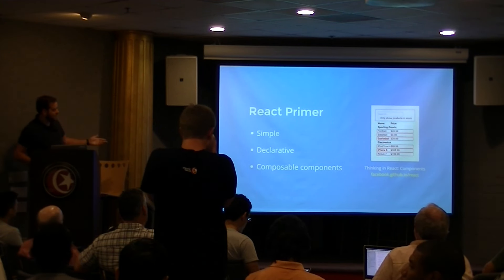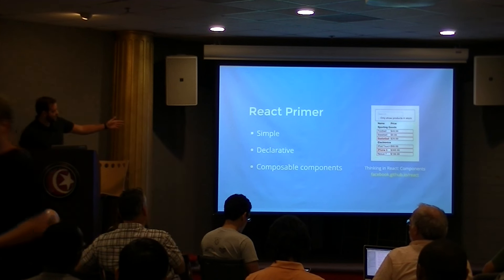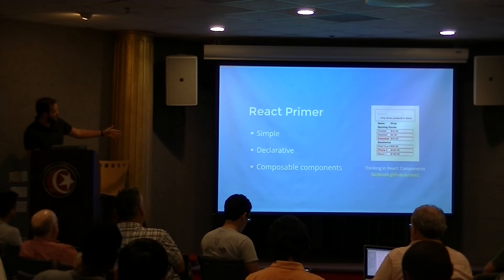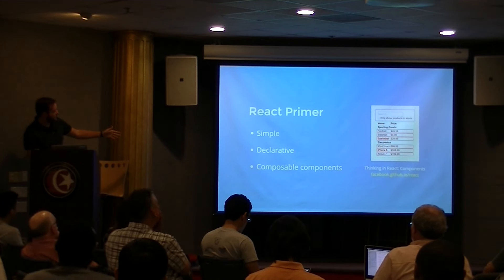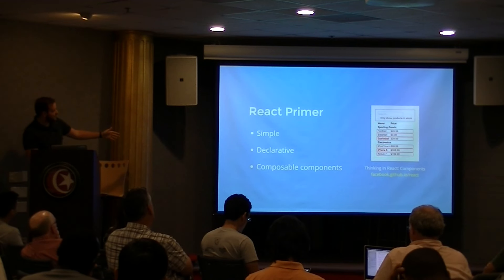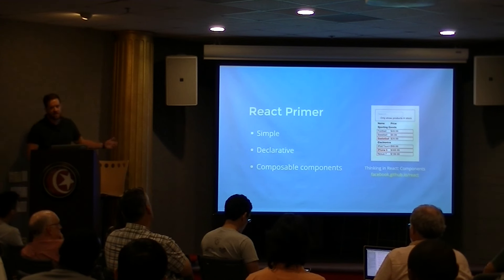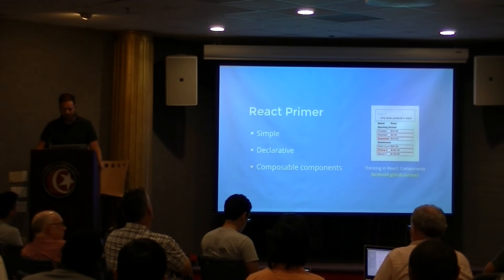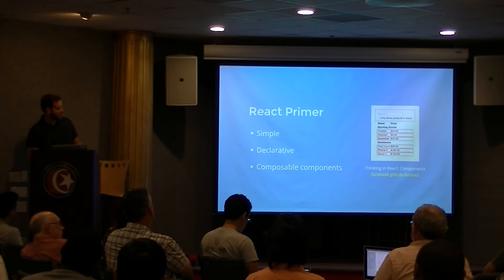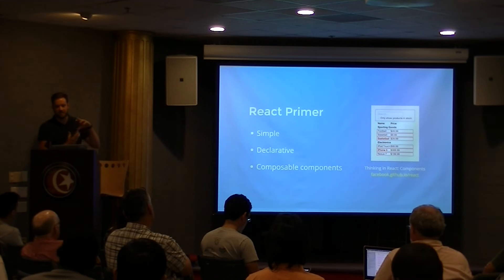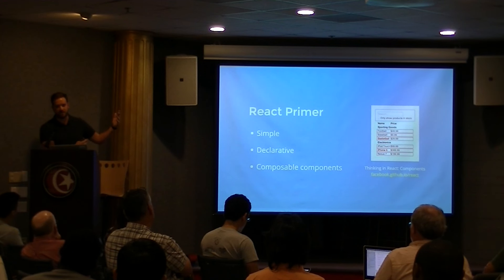You can wrap components in other components and compose your application by building up a tree of components. When you're thinking with React, you've got your outer app component, and then inside of it you've got a search component, a list component, a title component, and a row component. You think about things as individual components as pieces of a whole. It feels good to work that way because you can encapsulate everything inside of one component and just drop it into any project.